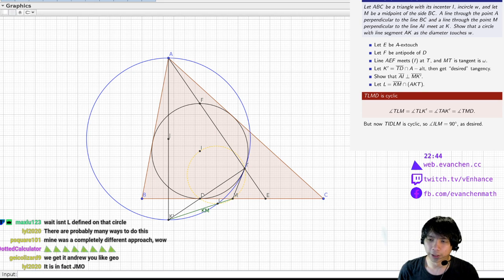No, L is defined as the green line intersect the blue circle, and then you show it lies on the yellow circle. It is, in fact, JMO, for Japan MO. Oh yeah.